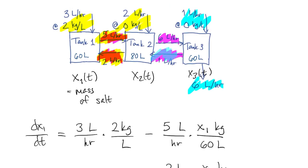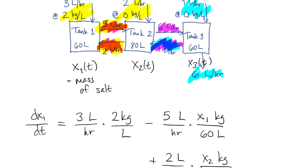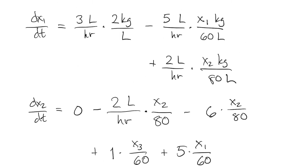We also lose what we're pumping over to tank two. So we lose one times the concentration in tank three. And then we have an input returning from tank two. So that gives us plus six times the concentration that's there. So that's a complete set now of three differential equations for the three masses.